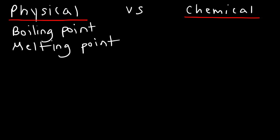Let's think of ice. When ice melts into liquid water, the chemical identity does not change. Ice is still H₂O. So, any type of property where the state of matter is changing, that's a physical property. So, melting point, boiling point, vaporization — that's another physical property.